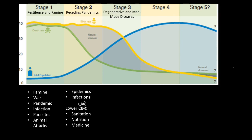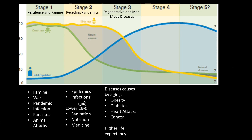In stage three, we have degenerative and man-made diseases — diseases caused by aging, like obesity, diabetes, heart attacks, and cancer. Obesity develops as people age and gain access to specialty foods. Diabetes, same thing — people can develop type 2 diabetes with age. Heart disease and cardiovascular disease are a big part of aging. And then cancer as well. There is now a higher life expectancy, and since people are living longer, the effects we see are these aging diseases.